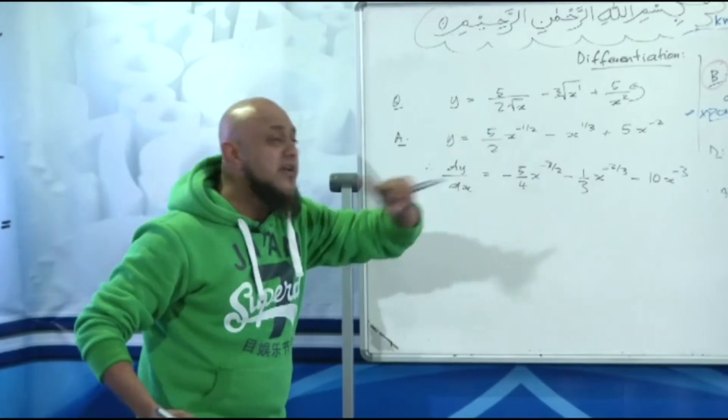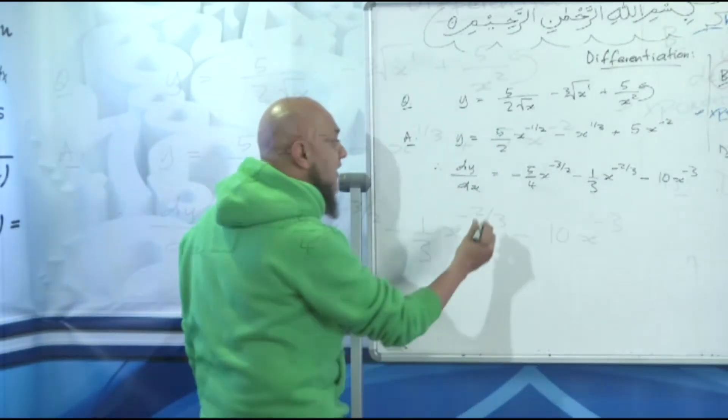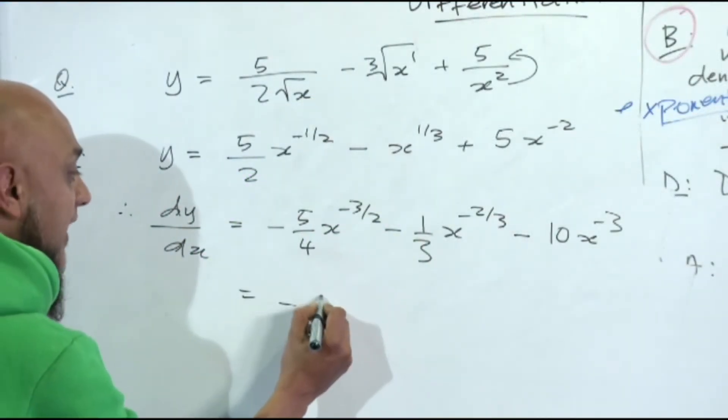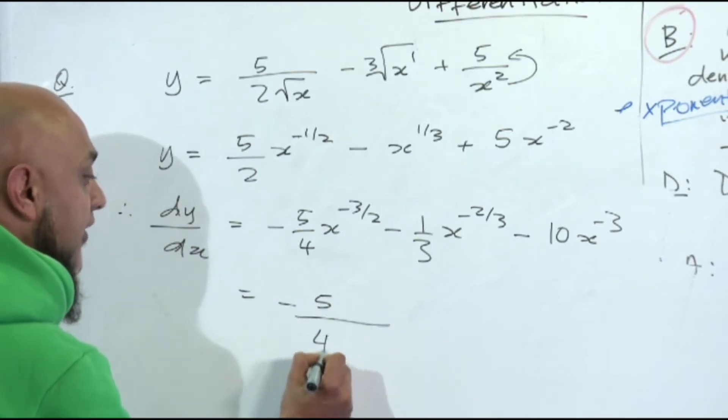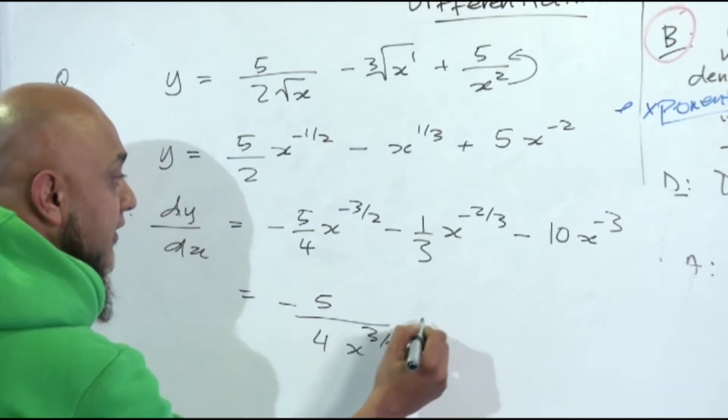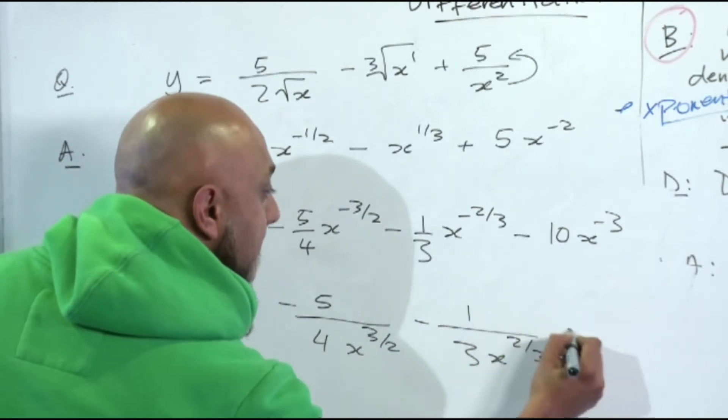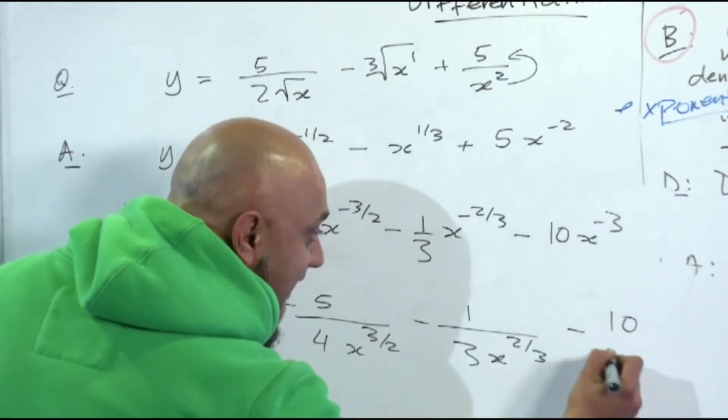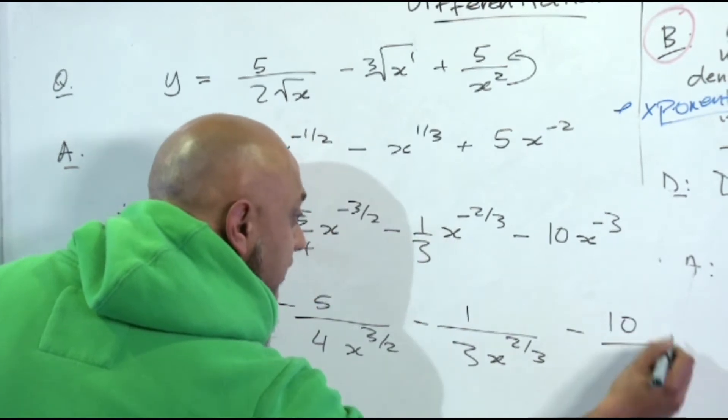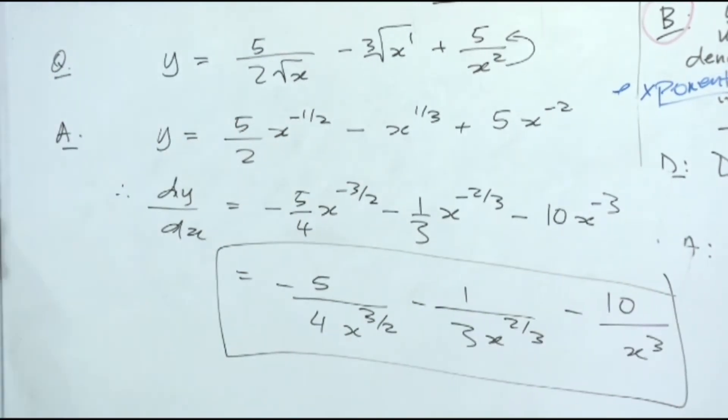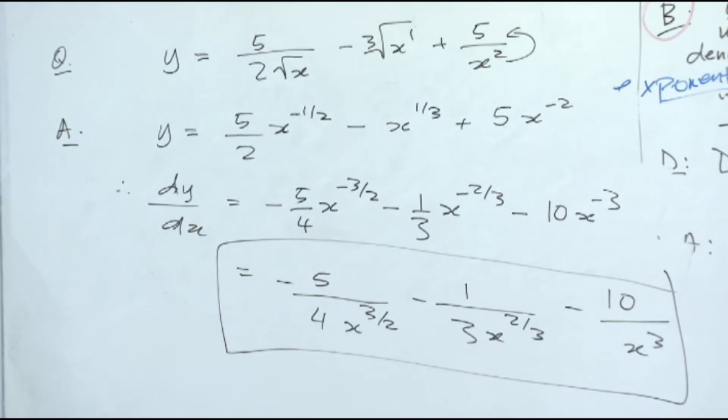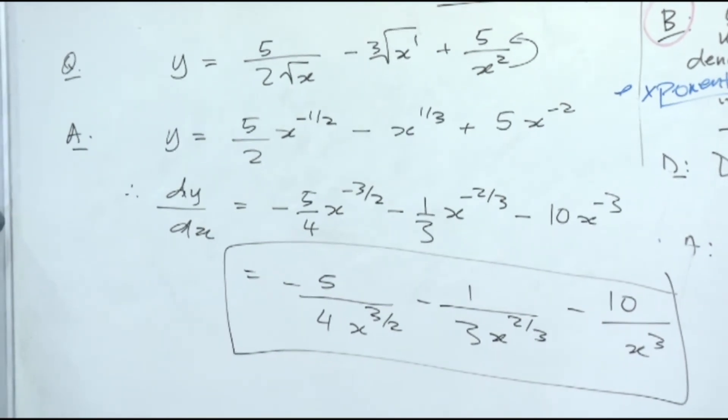We've got negative powers in our derivative. Can that be our final answer? No. We now say the final answer: minus 5 over 4 x to the power plus 3 over 2, minus 1 over 3 x to the power 2 over 3, minus 10 over x to the power 3 or x cubed. Boys and girls, that's your final answer. You probably will get 3 to 4 marks for that.